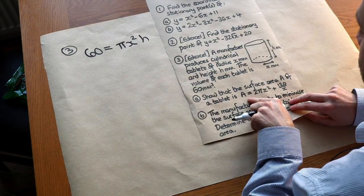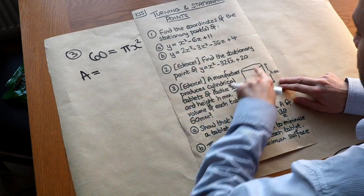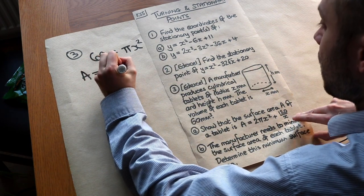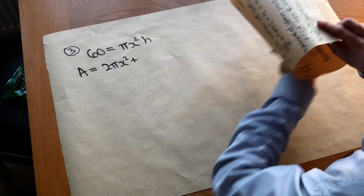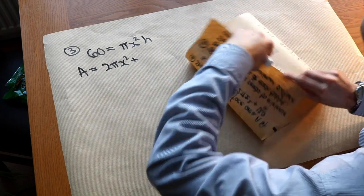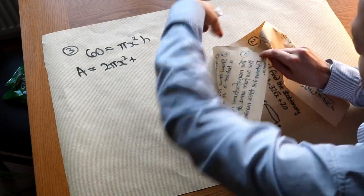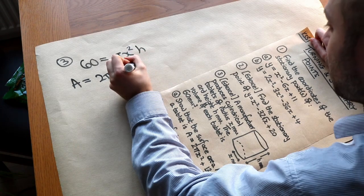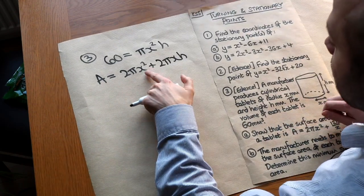Now let's write an equation for the surface area. A = 2πx² (two circular faces, top and bottom), plus the curved surface area. If you make a cut in the cylinder and unfold it into a rectangle, the height of the rectangle is the height of the cylinder, and the length is the circumference 2πx. So the curved surface area is 2πx·h. This gives us the surface area in terms of both x and h.